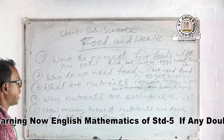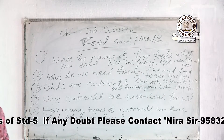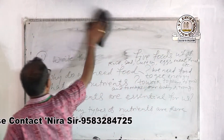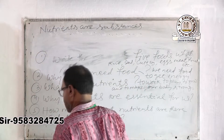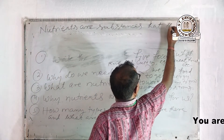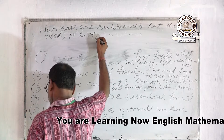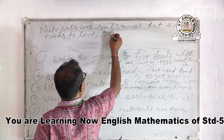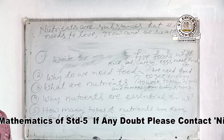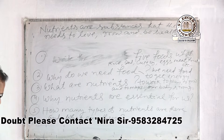What are nutrients? I'll write it here. Nutrients are substances that the body needs to live, grow, and be healthy. We can't get one type of nutrient from just one kind of food, so we require various types of food in our day-to-day life.